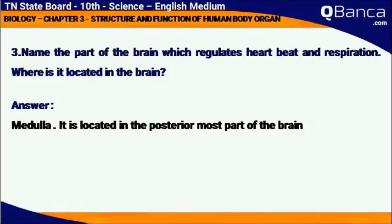Name the part of the brain which regulates heartbeat and respiration rate, and where is it located? The Medulla regulates heartbeat and respiration rate, and is located at the posterior-most part of the brain.